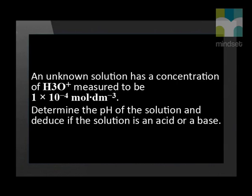Let us do an example to illustrate how to calculate the pH of an acidic substance. An unknown solution has a concentration of hydronium ions measured to be 1 times 10 to the exponent negative 4 mole per cubic decimetre. Determine the pH of the solution and deduce if the solution is an acid or a base.